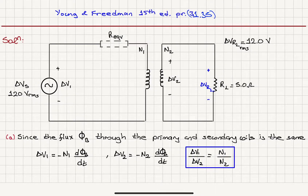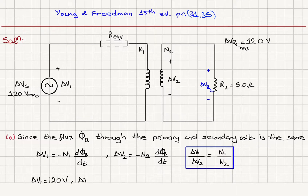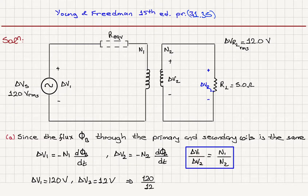So that is the turns ratio. We have delta V1 equal to 120 volts RMS and delta V2 equal to 12 volts RMS. We can find the ratio of the number of turns: 120 divided by 12 equals N1 over N2. So the ratio N1 over N2 should be equal to 10.